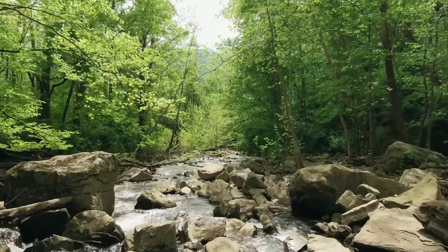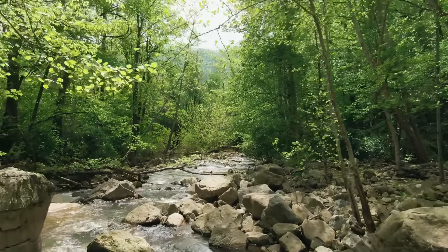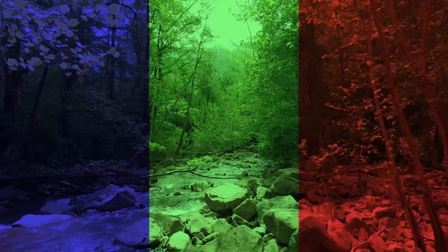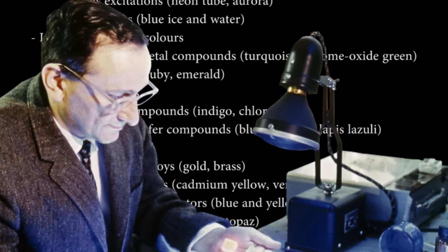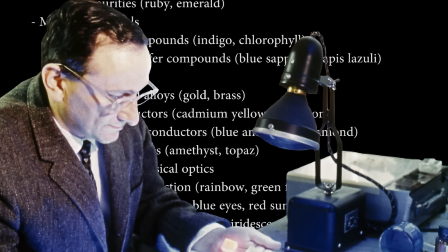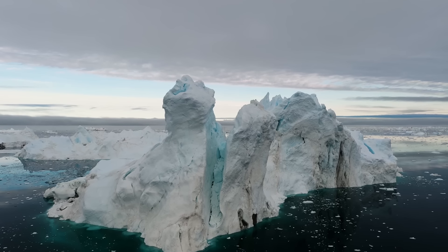The retinas of our eyes have things called cone cells — we have three types. One responds really well to blue light, one to green, and one to red. The colors we see in the world are the result of the way in which these receptors respond to different levels of blues, greens, and reds that are reflected by materials. In the book The Physics and Chemistry of Color by Kurt Nassau, he enumerates 15 different causes of color, including everything from the incandescence of flames, the rotations of blue ice and water, and the interference of soap bubbles.